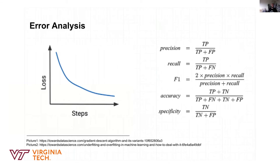To evaluate our models, we typically use measurements like precision, recall, specificity, and sensitivity. People who work in the medical and biological fields are more familiar with sensitivity and specificity — for example, tests like COVID tests. We use these measurements to evaluate our models.